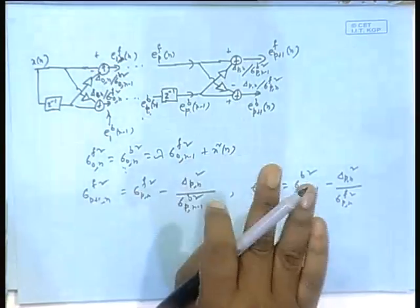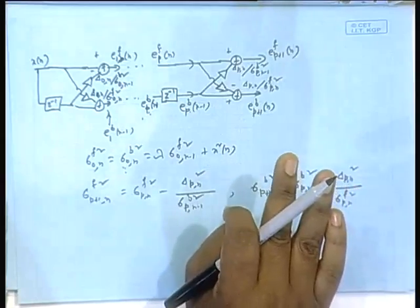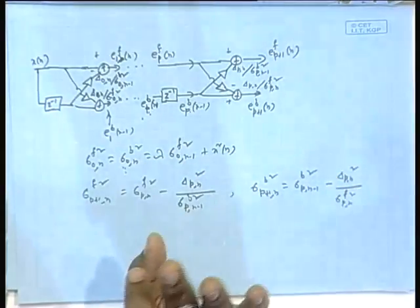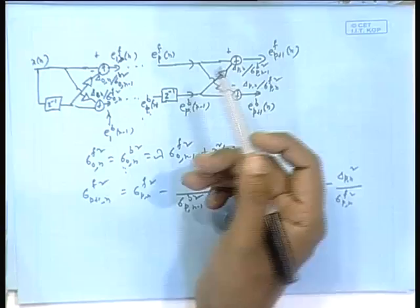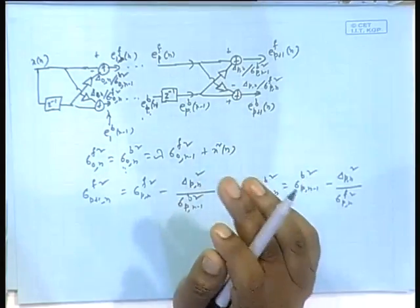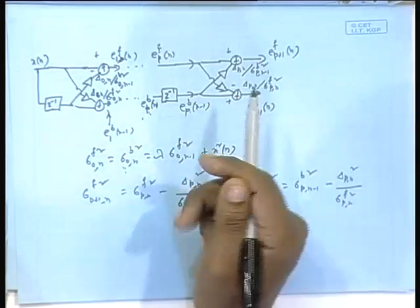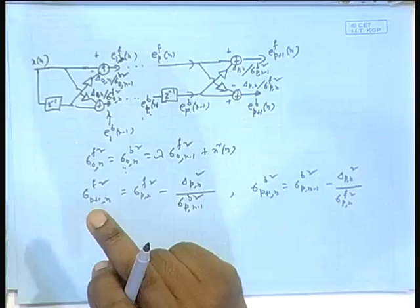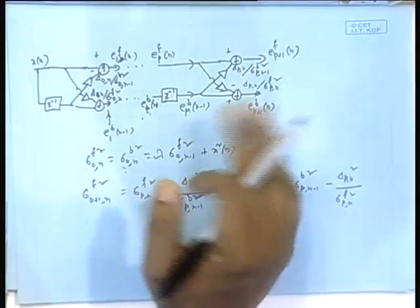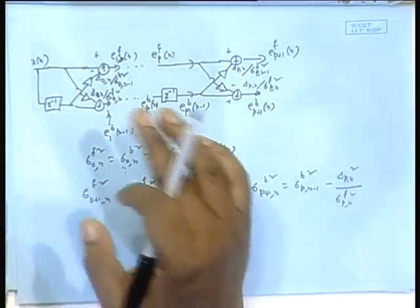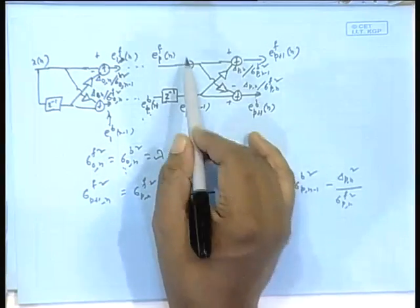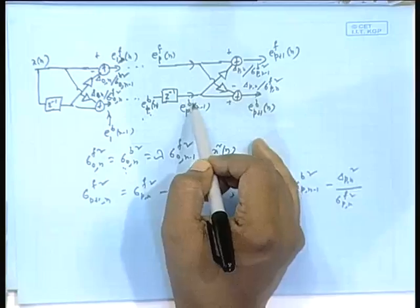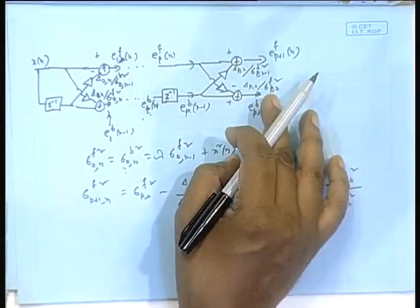Deltas will be updated, but it is not possible to order-update delta - the mathematics does not allow it. So what we will be doing? For every stage we will be time-updating delta. That is, from the previous value of delta we need some storage - we need to store the previous index value of delta. That will be used to time-update, to get the current delta_p_n from delta_p_(n-1), using the two errors available: the forward prediction and backward prediction errors.